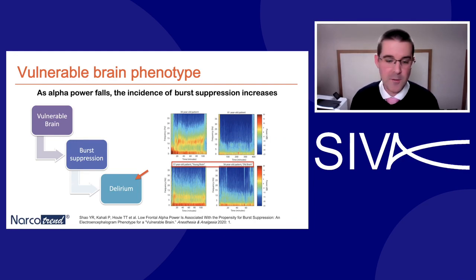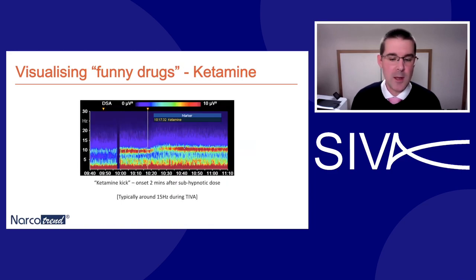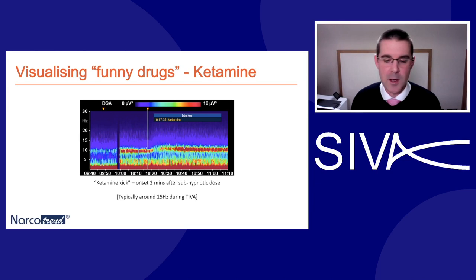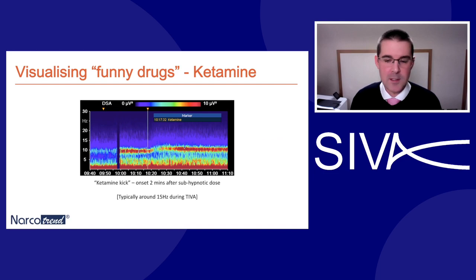Now, finally, visualizing the funny drugs. With DSA it's possible to see the effects of ketamine, which can confuse some processed EEG algorithms. During a TIVA-based anaesthetic it's characteristic to see a temporary increase in the frequency of these higher frequency oscillations, which can last for up to an hour. Using the Narcotrend I've applied a marker at the point where I've given a sub-hypnotic dose of the drug, and we can see that characteristic increase in oscillation frequency after around about two minutes. This is a fantastic real-life lesson in applied neuropharmacology and solves one of those perennial problems with index-based systems.